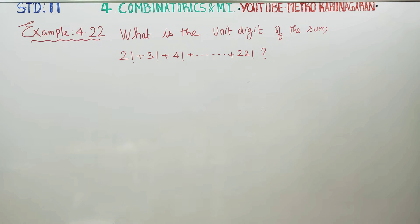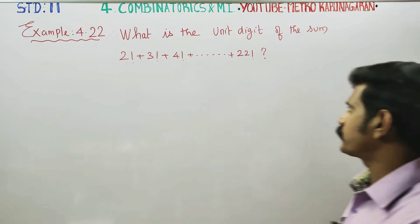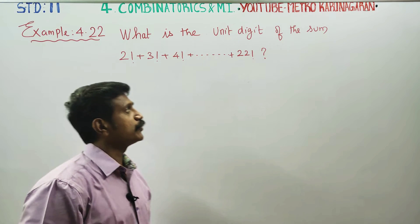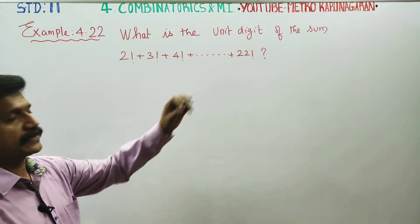Dear Levin Standard students, what is the unit digit of the sum 2 factorial plus 3 factorial plus 4 factorial, dot dot dot, up to 22 factorial?